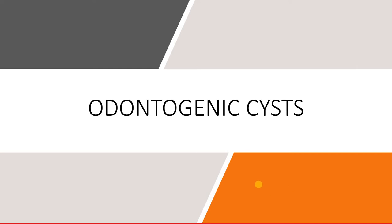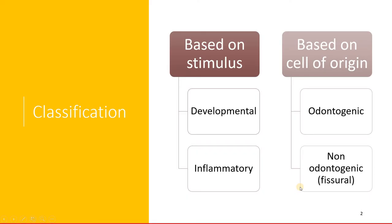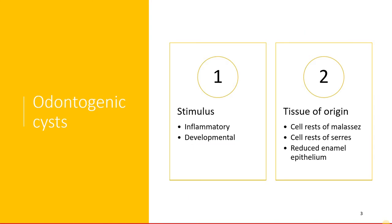Welcome back. In this series, this is the second lecture which is going to talk about the odontogenic cysts. In the last presentation you saw that cysts can be basically divided as developmental and inflammatory. Based on the cell of origin, it can be either odontogenic or non-odontogenic cysts derived from inclusions of the facial processes. Based upon the stimulus, you have inflammatory odontogenic cysts and developmental odontogenic cysts, both originating from cell rests of Malassez, cell rests of Serre, or reduced enamel epithelium.